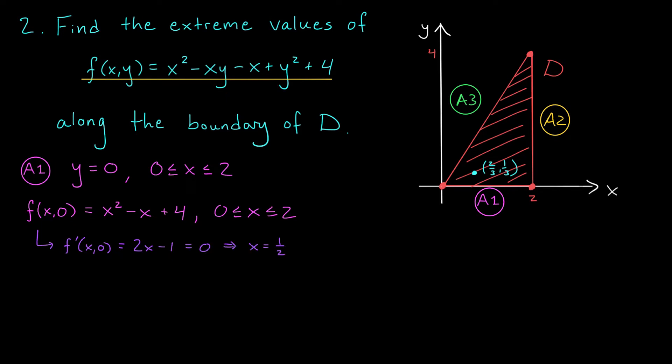So, we have a critical point at 1/2 and two endpoints. One where x is 0 and one where x is 2. So, let's throw in all three of these points. We get (0,0), (1/2, 0), and (2,0). We're going to test all of these at the end of the problem.